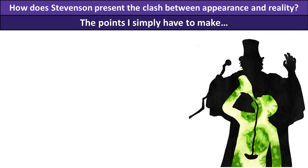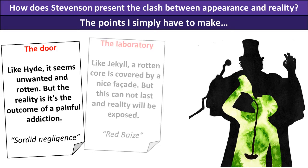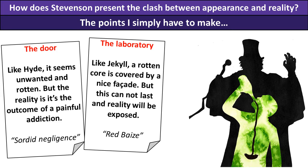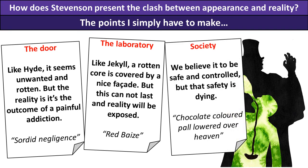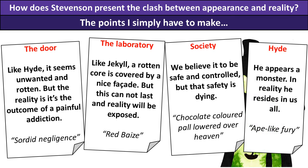There are four points I want to make about appearance and reality. First, the door — like Hyde it seems unwanted and rotten, but the reality is it's the outcome of a painful addiction. Second, the laboratory — like Jekyll it has a rotten core covered by a nice facade that cannot last. Third, society as a whole — we believe it to be safe and controlled but that safety is dying. Fourth, Hyde — he appears to be a monster but in reality he resides in us all and is nothing too special.